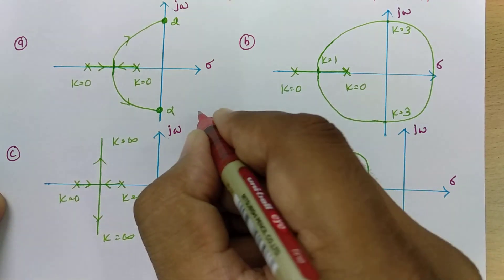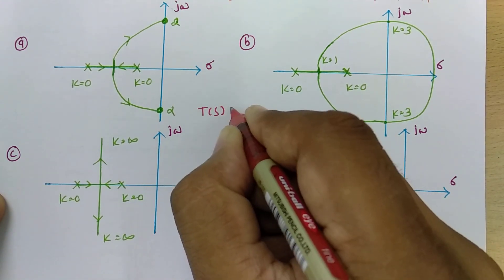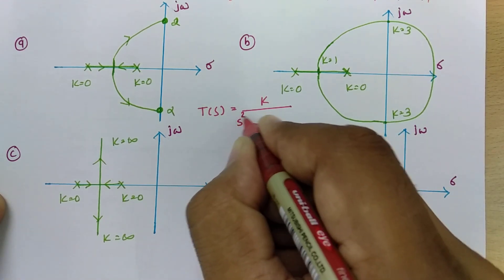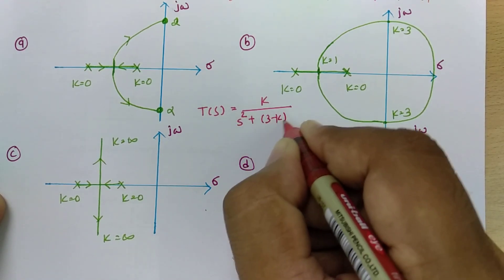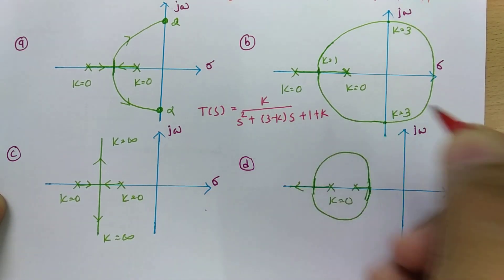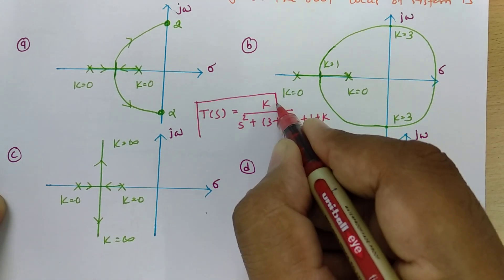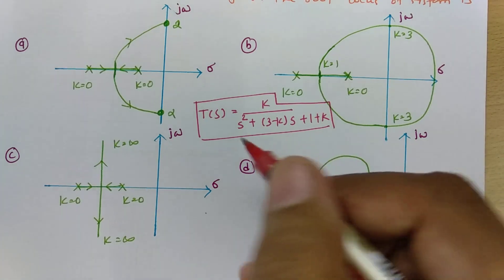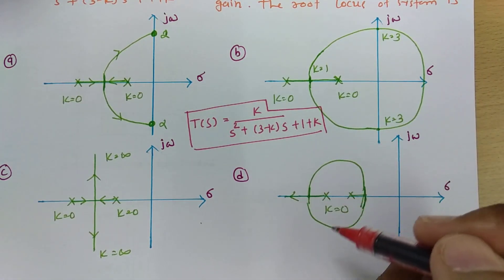I am writing the transfer function again so one can easily read it. The transfer function is given by k divided by s squared plus 3 minus k times s plus 1 plus k. Now we need to determine which is the correct root locus based on this transfer function.